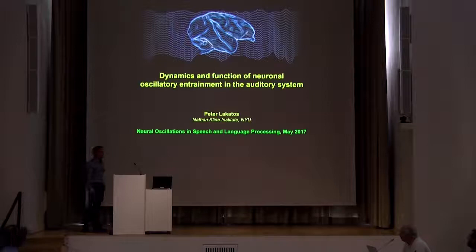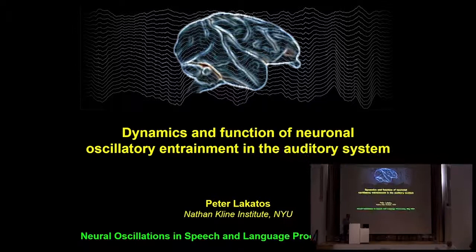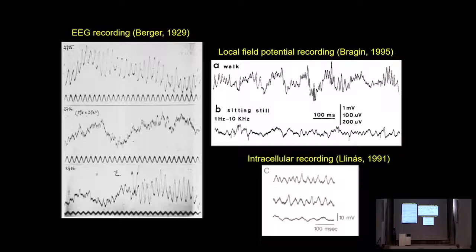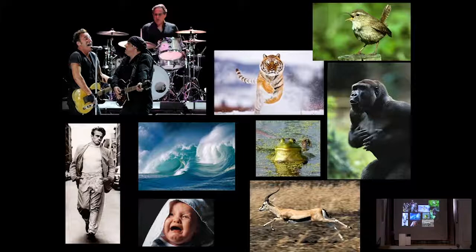Thank you to the organizers for inviting me. As you all know, neuronal oscillations are a prominent feature of electrophysiological recordings on all levels, reflecting that one of the major operational modes in the brain is rhythmic. Since most auditory stimuli we encounter are also rhythmic, the brain and the acoustic environment are a good match if the brain has mechanisms to align its internal excitability fluctuations—signaled by neuronal oscillations—to the timing of relevant auditory stimuli.